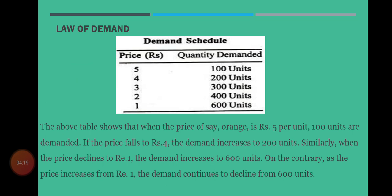There is a schedule for the law of demand۔ Law of demand کے اس relationship کو — جو کہ price اور quantity demanded میں negative relationship کو show کرتا ہے — show کرنے کے لیے ہم نے یہاں ایک demand schedule design کیا ہے۔ اس demand schedule کے دو columns ہیں: first column میں price رکھی اور دوسرے column میں quantity demanded۔ Commodity کی price 5 پر 100 units demand کیے جا رہے ہیں۔